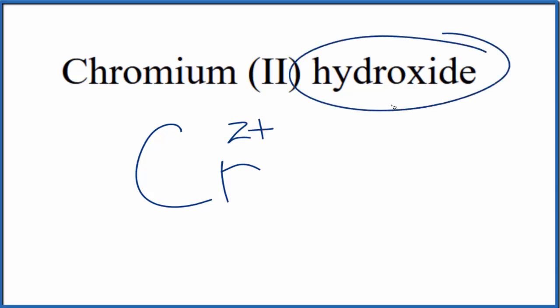Hydroxide, this is one you need to remember, it's a polyatomic ion. So the hydroxide ion, that's OH minus.